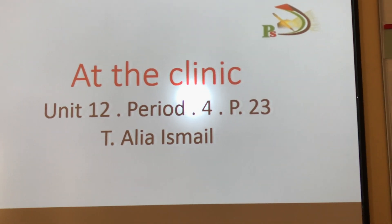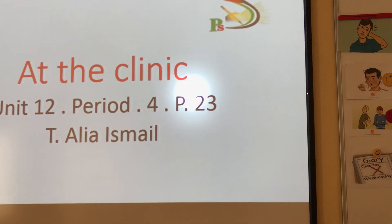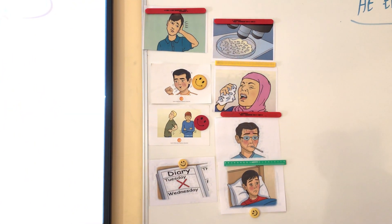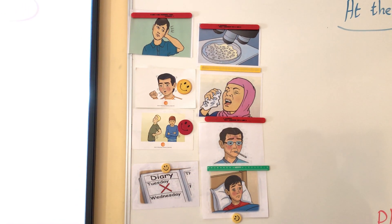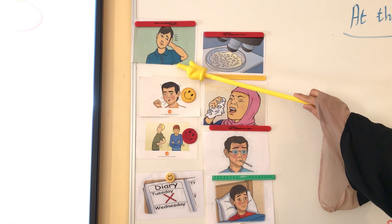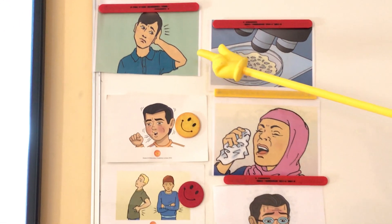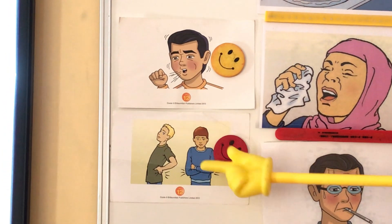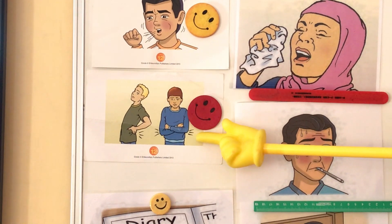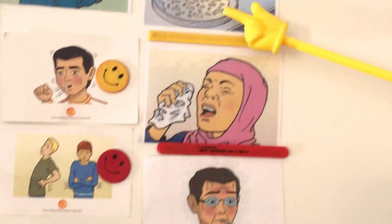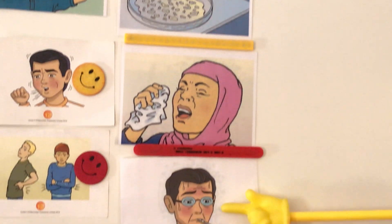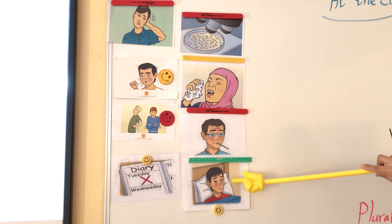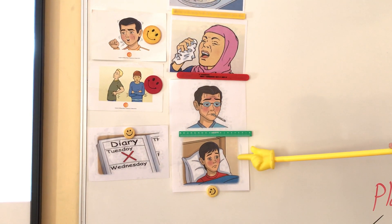Before we start answering the questions, let's revise the new vocabulary in the unit. Look here — we have some pictures of the new vocab. I want you to look at the pictures and say the words. Can you see the pictures? We have: earache, cough, backache, stomachache, sense, back, sneeze, fever, and sick. Remember, sick means ill — they have the same meaning.